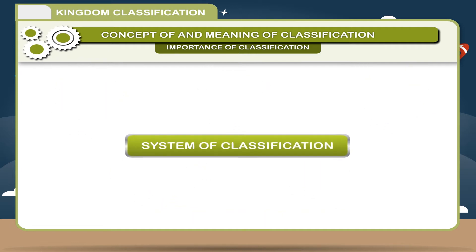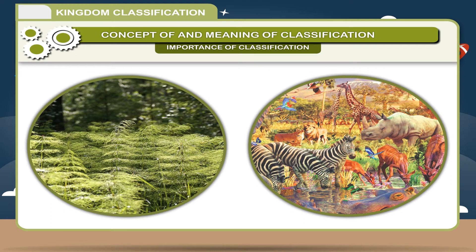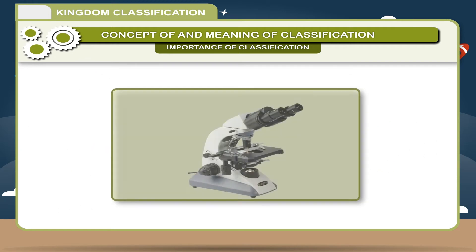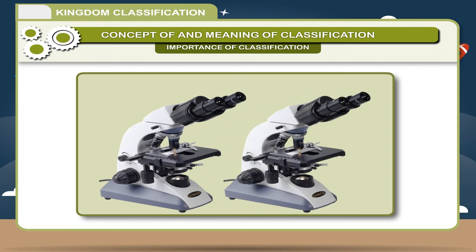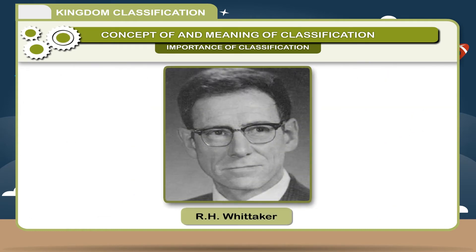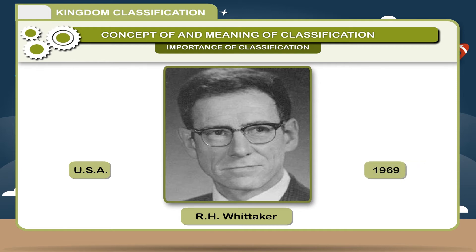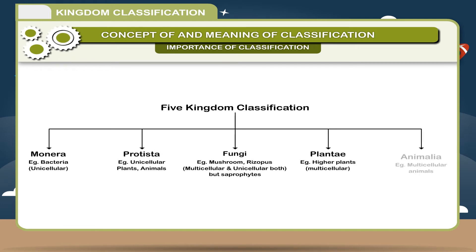System of Classification: All living things were initially divided into two kingdoms, namely plants and animals. Later, due to development of technology, the microscope was invented and there was an increase in knowledge of the structure of different organisms. So, later, R. H. Whittaker, a leading ecologist from USA, proposed Five Kingdom Classification in 1969. This classification is based on cellular organization, cell structure, mode of nutrition, etc.